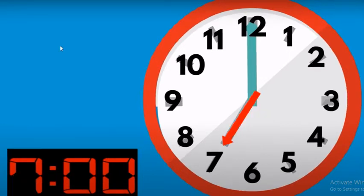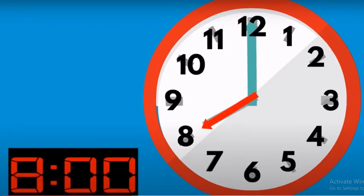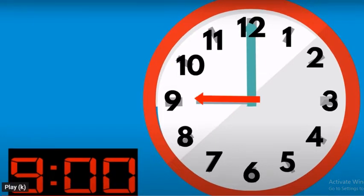What time is it here? 7 o'clock, because the red pointer is pointing at number 7, and the blue pointer is still pointing at number 12. Therefore it's 7 o'clock. Who can tell me what time it is now? Very good, I can hear you all — it's 8 o'clock. And what time is it here? Very good, 9 o'clock. The red pointer is pointing at number 9 and the blue one is still on number 12, so it's 9 o'clock.